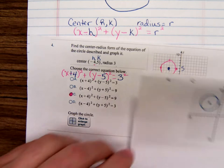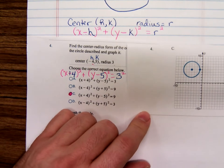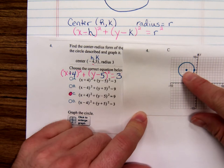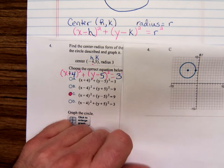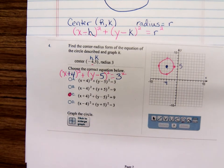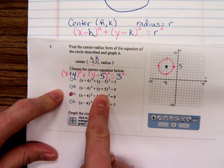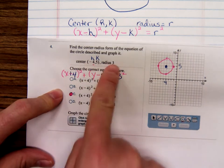It'll look something like that. Here's the graph. A really good one. The center, left 4, up 5, radius 3. Notice when you're doing this graphing, you're not using the equation. You're using only the center and radius.